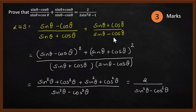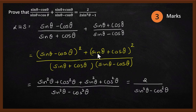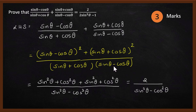Next step: the denominators are sin theta plus cos theta and sin theta minus cos theta. We take the LCM of these two. Multiplying through, you get sin theta minus cos theta squared in the first term's numerator, and sin theta plus cos theta squared in the second term's numerator. The LCM denominator is sin theta plus cos theta multiplied by sin theta minus cos theta — the numerator is in the form of A minus B whole square and A plus B whole square, while the denominator is A plus B multiplied by A minus B.